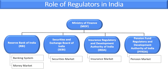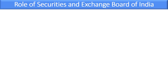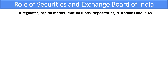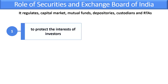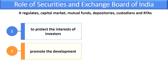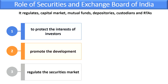The beauty of our Indian economy is that our regulatory structure is so robust, and that's why our economy is growing. SEBI regulates the capital market, mutual funds, depositories, custodians, registrar and transfer agents, and all other agencies related to the capital market. Their basic roles are: first, to protect the interest of investors; second, to promote the development of the capital market; third, to regulate the securities market.